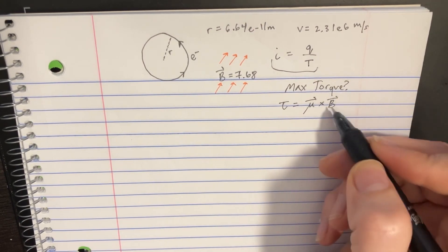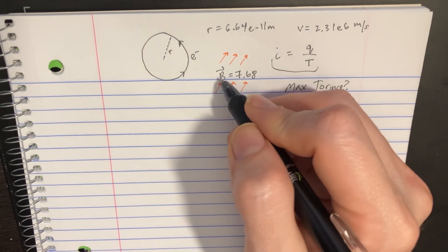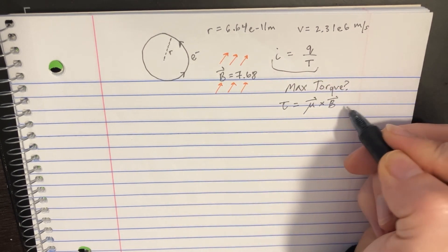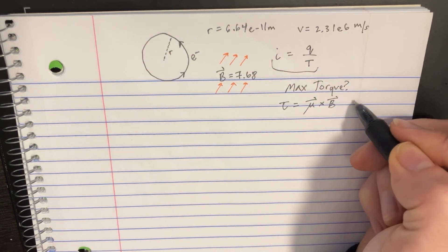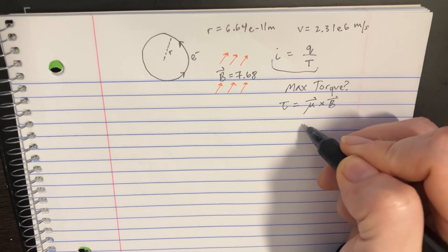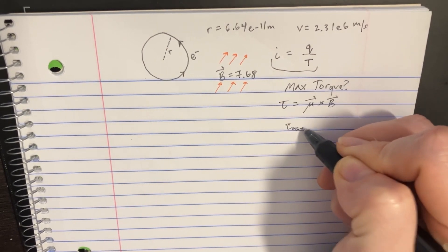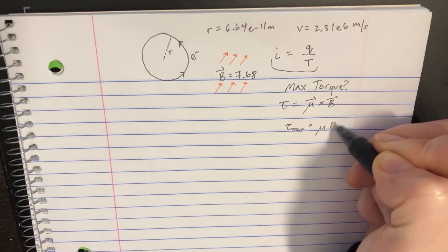If we want to maximize this, then the angle would have to be 90 degrees, so the sine would equal 1. That way the max torque would be mu times B.